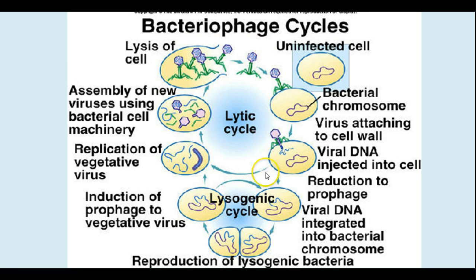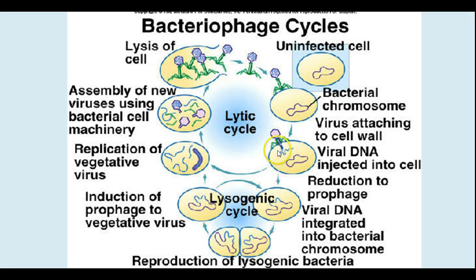Some viruses are also able to go into a lysogenic phase where the viral DNA actually hides inside the bacterial chromosome — it's called a prophage at that point. You can see the blue part is inside the purple. Every time the bacterial cell is reproduced it reproduces the virus DNA as well, and at some point some stressor causes it to come out of the bacterial genome and become active. The lysogenic is a hiding phase and the lytic phase is the more active cycle.